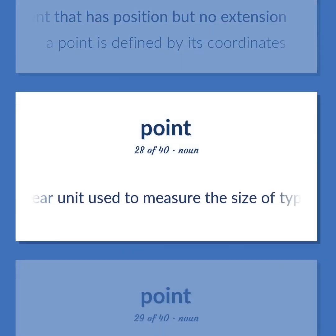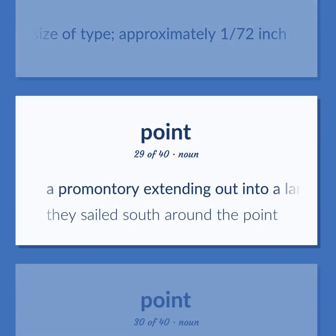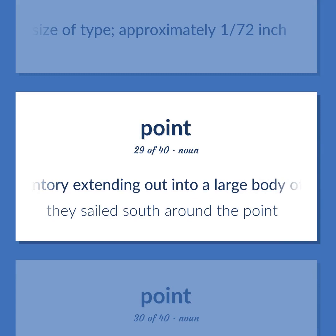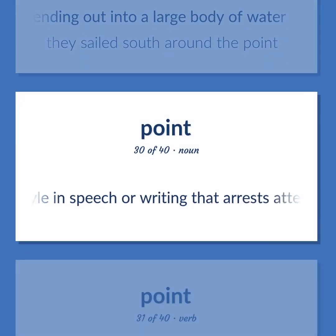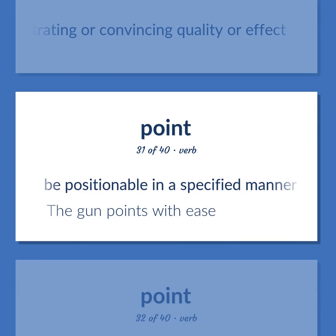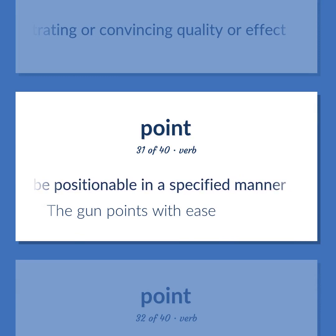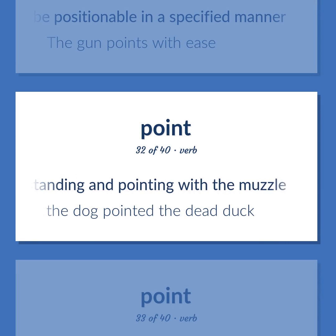Point: A linear unit used to measure the size of type, approximately 1/72nd inch. A promontory extending out into a large body of water — they sailed south around the point. A style in speech or writing that arrests attention and has a penetrating or convincing quality or effect. Be positionable in a specified manner — the gun points with ease. Indicate the presence of game by standing and pointing with the muzzle — the dog pointed the dead duck.